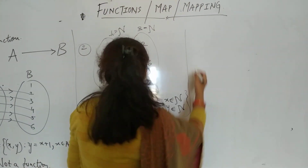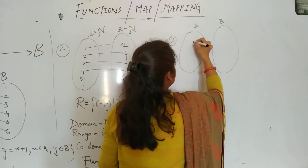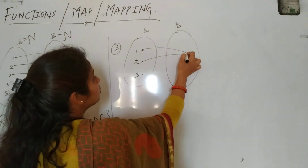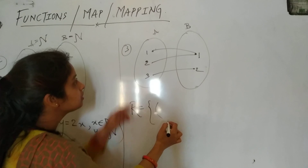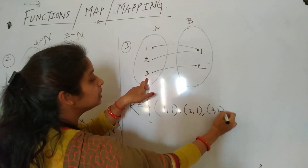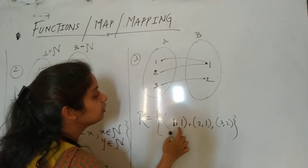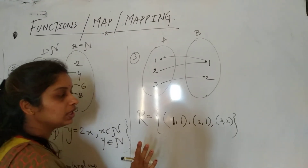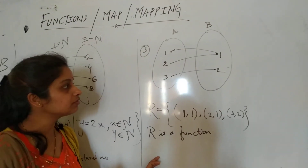Let us take another example — Example 3. Suppose this is set A, this is set B where B is 1, 2 and 3. Here 1 is going to 1, and this is 2. So the relation contains: 1's image is 1, 2's image is 1, and 3's image is 2. So what can we say? Element 1 has a unique image in set B, element 2 has a unique image, and 3 has a unique image. So this R is a function — clearly, it is a function.